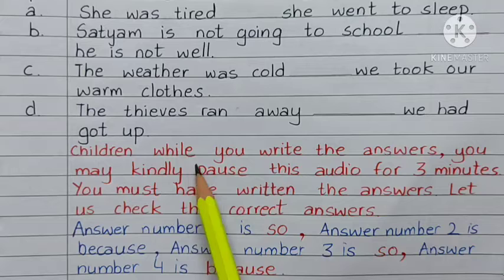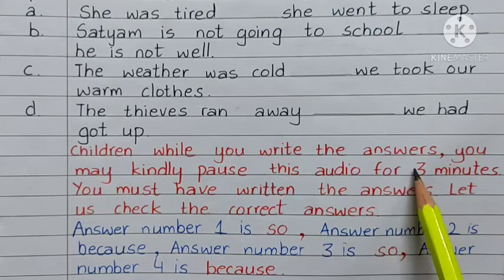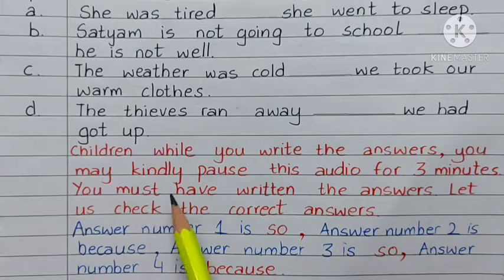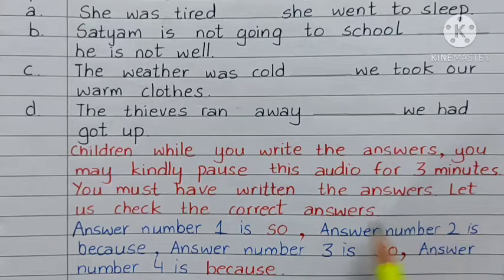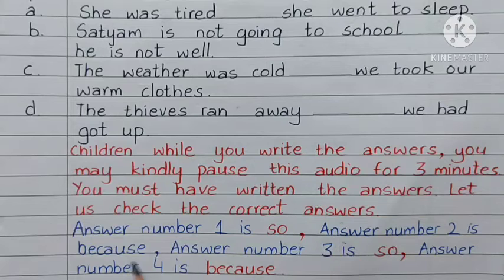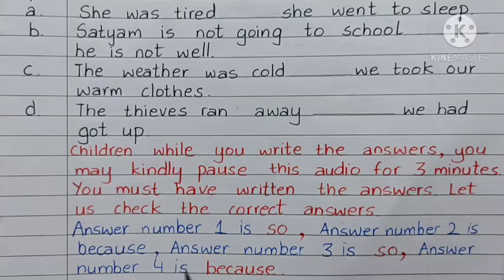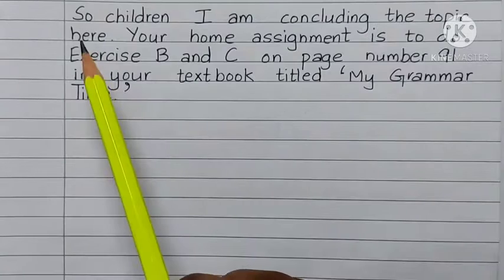Children, while you write the answers, you may kindly pause this video for three minutes. You must have written the answers. Let me check the correct answers. Answer number one is 'so'. Answer number two is 'because'. Answer number three is 'so'. Answer number four is 'because'.